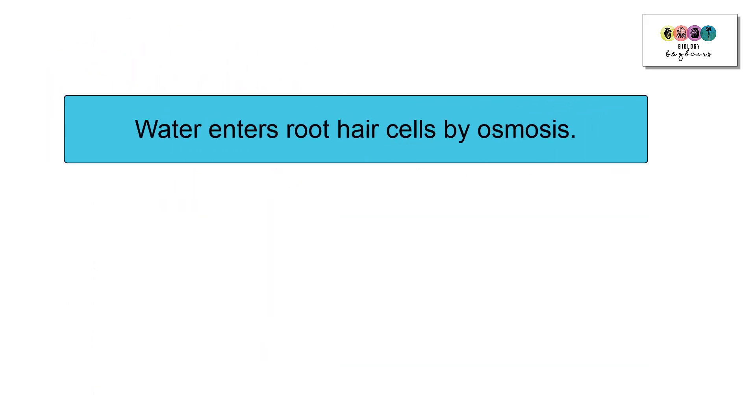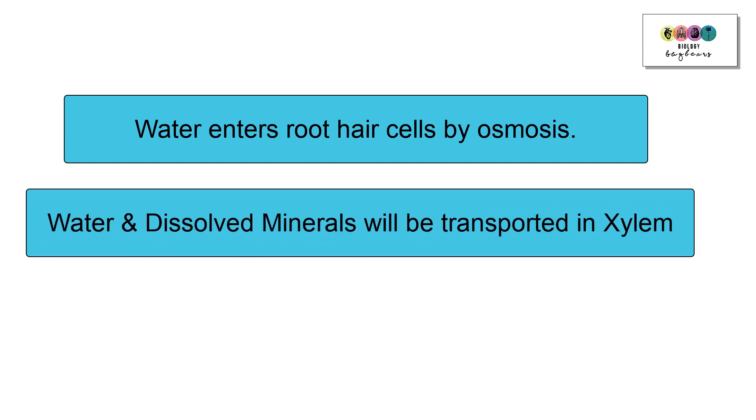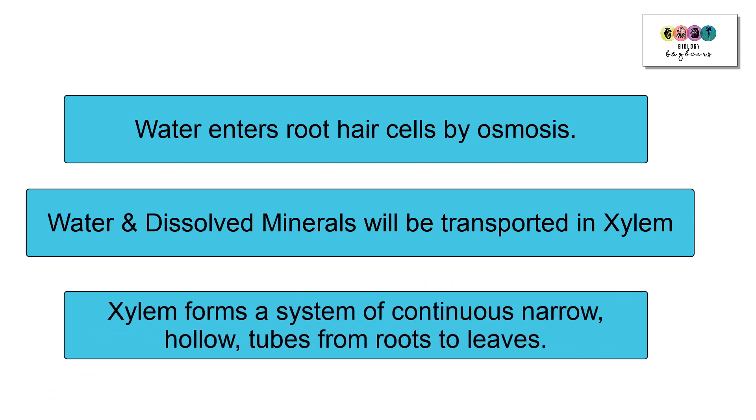At this stage, just know that water enters the root hair cells by osmosis, that passive process. Water and dissolved minerals are going to be transported in xylem, and this is possible because xylem forms this system of continuous very narrow hollow tubes from the roots right up to the leaves.